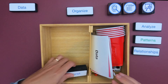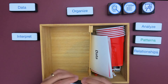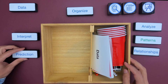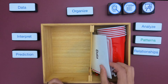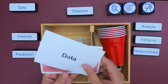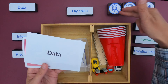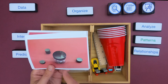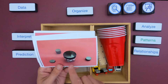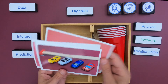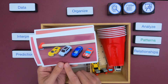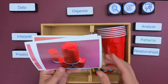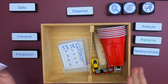Once we've done that, the next thing we want to do is interpret the data — what does the data actually tell us? And then finally, what predictions could we make based on the data? After watching this video, you should be able to look at data from an investigation like a bouncing ball, magnets and spheres, cars and a ramp, or a cup stacking investigation.